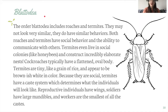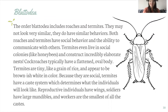Lastly we have the order Blattodea. The order Blattodea includes roaches and termites. They might not look very similar, however they do share some similar behaviors. Both roaches and termites have social behavior and the ability to communicate with others. Termites even live in social colonies like honeybees do, and they can construct incredibly elaborate nests, which we'll see a picture of on the next slide.